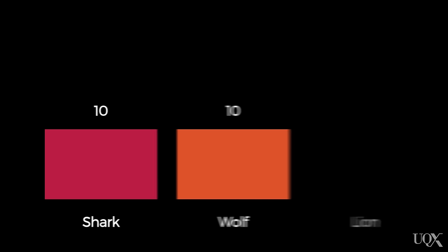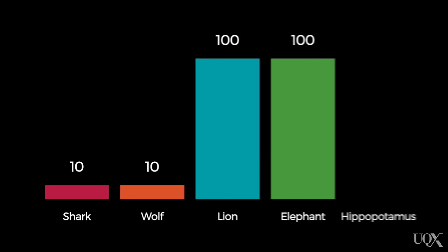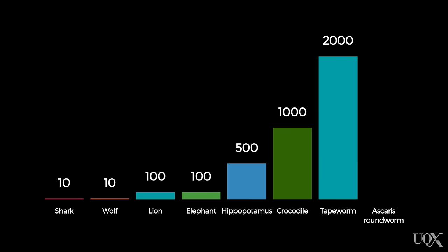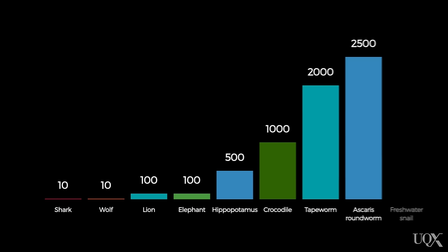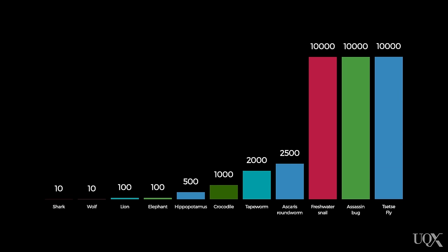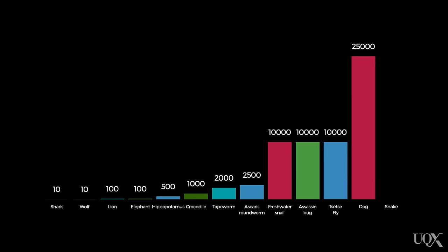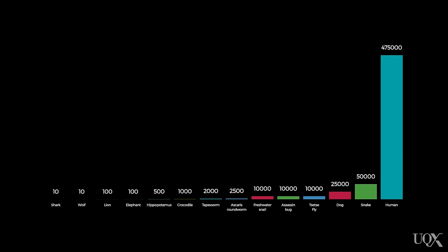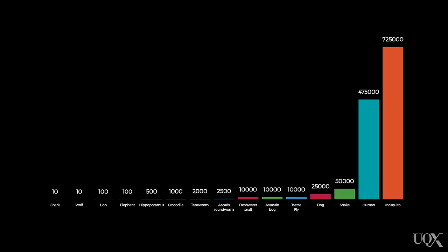Sharks and wolves killed only 10 people each. Lions and elephants killed 100 people each. The hippopotamus accounted for 500 deaths, the crocodile 1,000, and the tapeworm 2,000. The roundworm killed 2,500, and the freshwater snail, assassin bug, and tsetse fly each accounted for 10,000. Dogs killed 25,000 and snakes 50,000. Humans killed 475,000 people, but mosquitoes took the lead with 725,000 deaths.